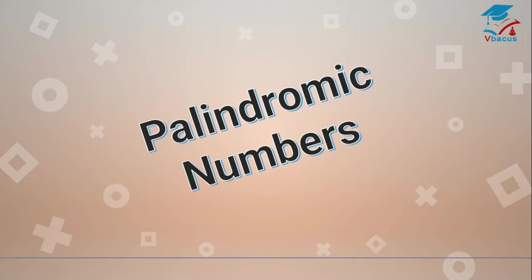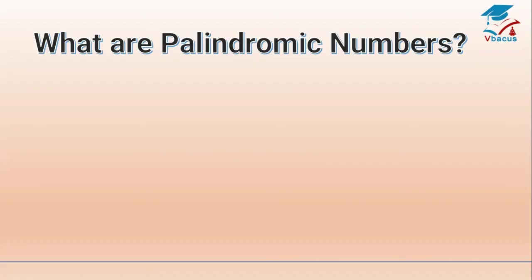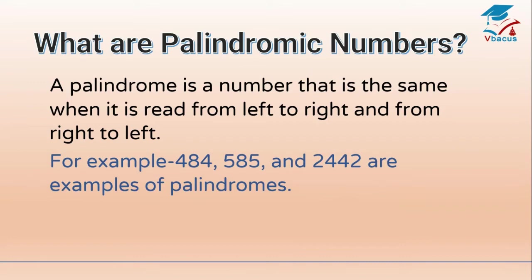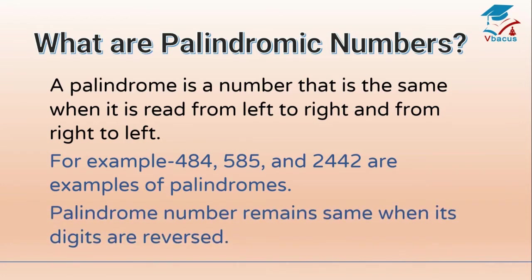Before we look into the numbers, we must know what are palindromic numbers. A palindrome is a number that is the same when it is read from left to right and from right to left. For example, 484, 585, and 2442 are examples of palindromes. A palindrome number remains the same when its digits are reversed.